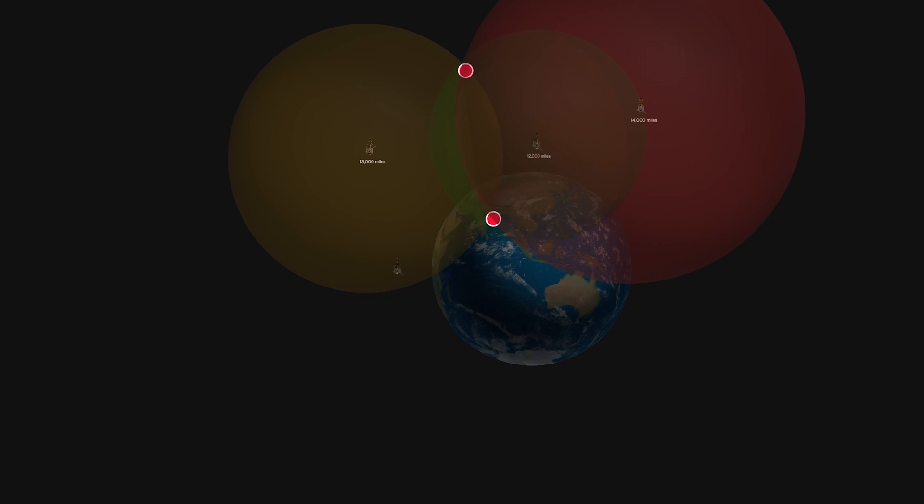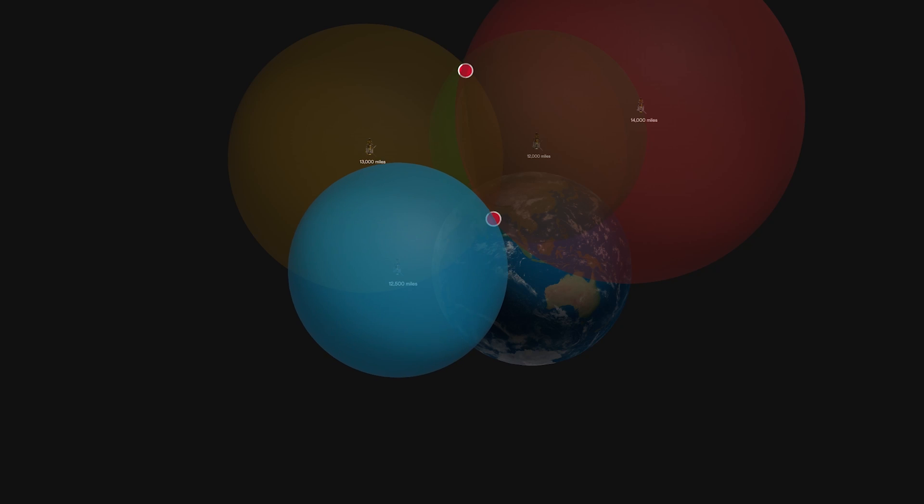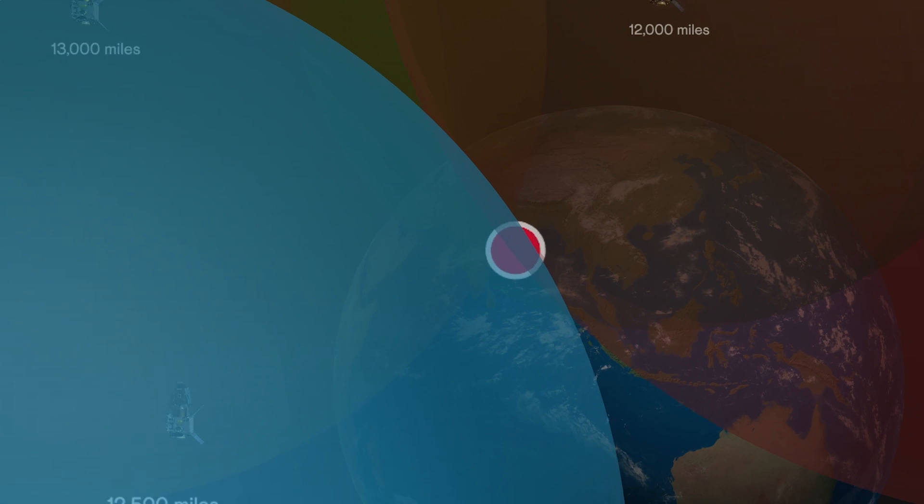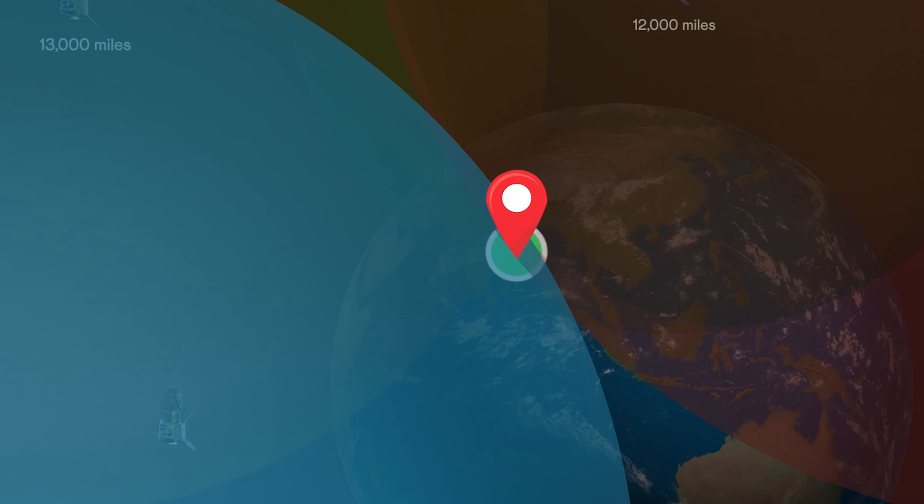For that, we need a fourth satellite. If we know the distance from this one as well, say, 12,500 miles, we get a fourth sphere. It intersects the previous three at a single point. And that's your exact location.